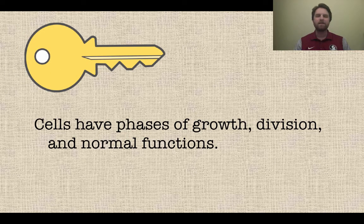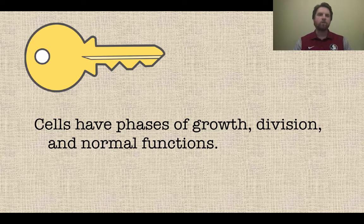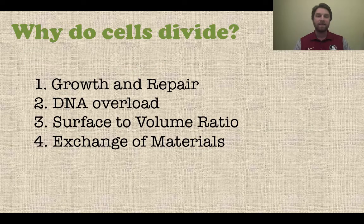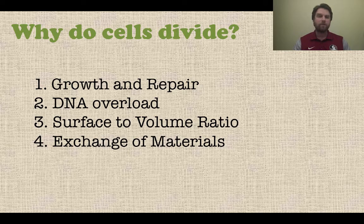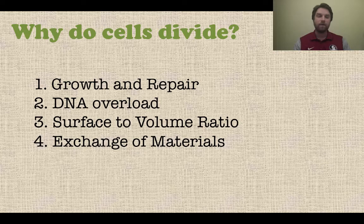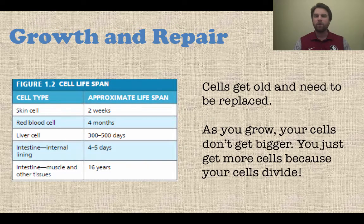Cells have phases of growth, division, and normal functions. We've learned about some of the normal functions of cells, but now we're going to talk about growing and dividing when they need to. So first of all, let's talk about why cells divide. There are four reasons: they either need to grow or repair themselves, there's something called DNA overload, there's an issue with surface to volume ratio of the cell itself, and also exchange of materials. So let's look at each one of those individually.